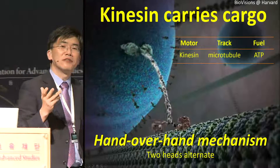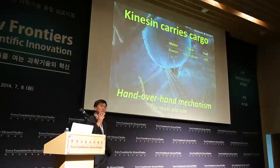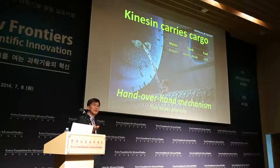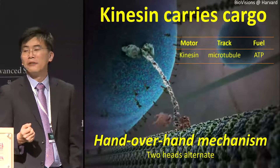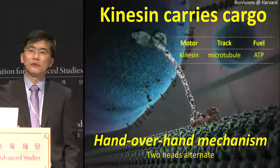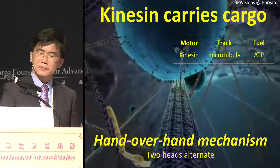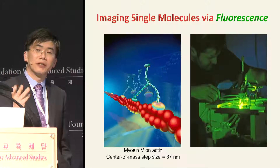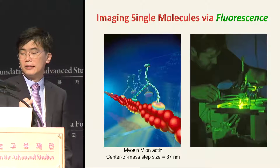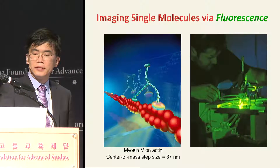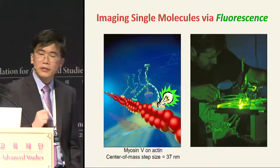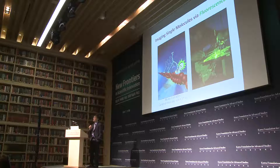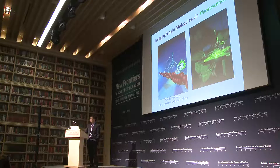There was a controversy about how these molecules move in the cell. Does it walk like a human, or does it crawl like a baby? We were able to use physics-based tools to address this question many years ago. We can put a single fluorescent label on a known position of the moving protein, and then use highly sensitive fluorescent microscopy in a dark room to image that single molecule to a camera.